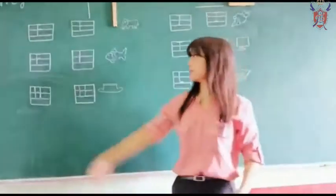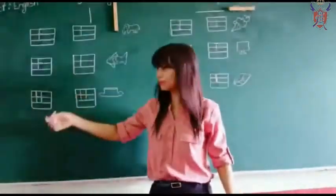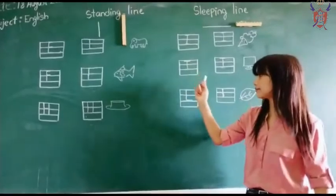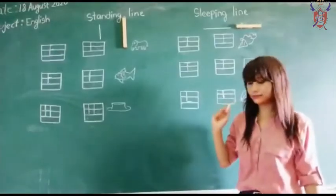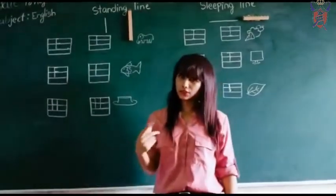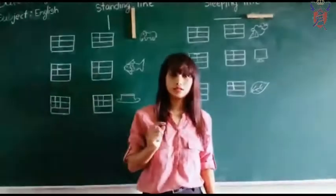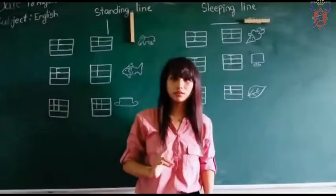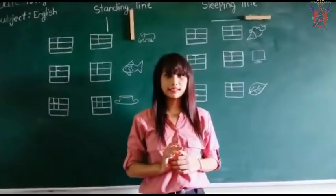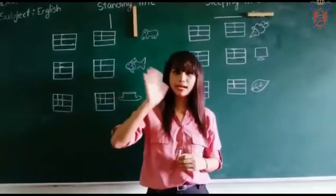So today we have learned letters E, F, H, I, T and L. In the next video we will learn slanting line, curve and wave lines. Okay? Till then, bye-bye.